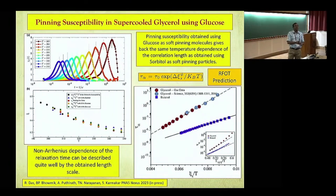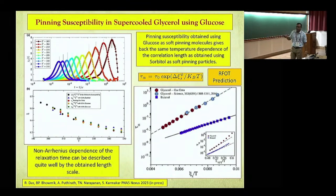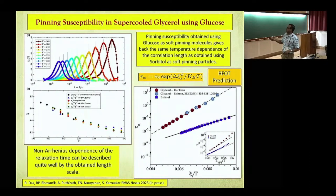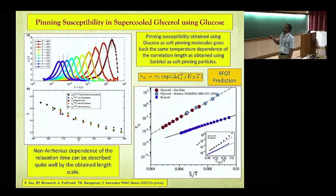As a teaser: RFOT theory tells you that relaxation time should be a function of ξ^d/k_BT. The raw data shows the departure from Arrhenius behavior is not drastic — here we have two sets of data, one for glycerol and one for butanol. But if you introduce the correlation length — although it does not change by a huge factor within this window of temperature — it actually shows that indeed this kind of relation seems to be valid, with ψ chosen to be one.